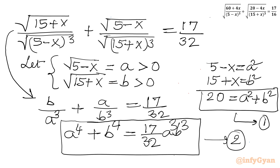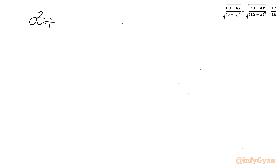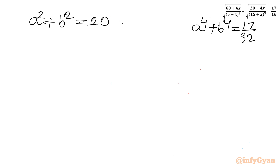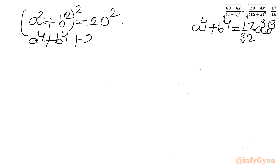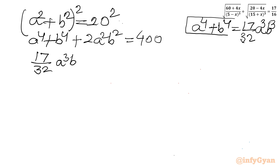Now we have to solve this new system of equations. Let me write: a squared plus b squared equal to 20, and a to the power 4 plus b to the power 4 equal to 17 over 32 times a cubed b cubed. Let us consider squaring equation 1. So I can write a to the power 4 plus b to the power 4 plus 2a squared b squared equal to 400. Now substituting a power 4 plus b power 4 from equation 2: 17 over 32 times a cubed b cubed plus 2a squared b squared minus 400 equal to 0.